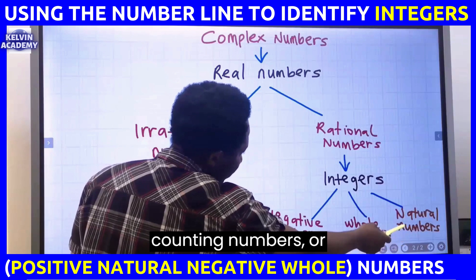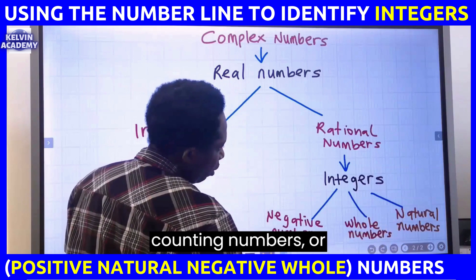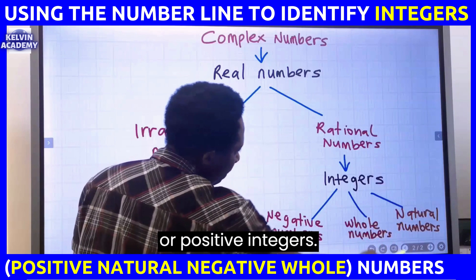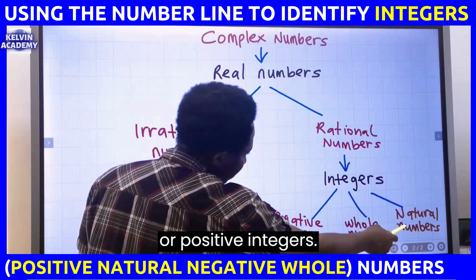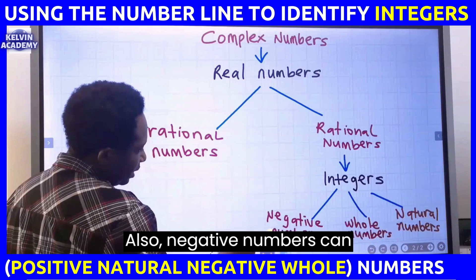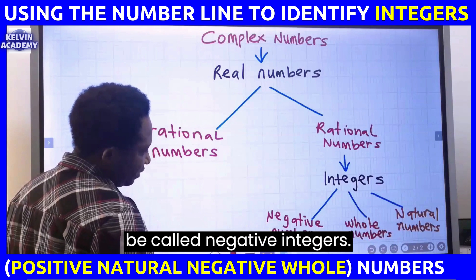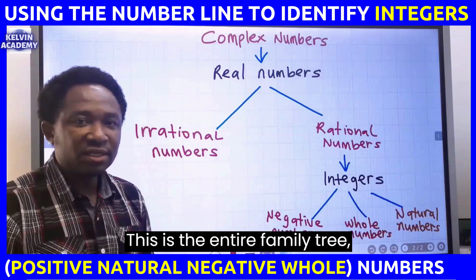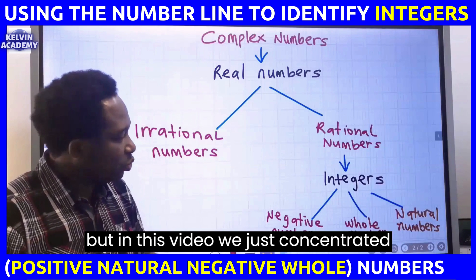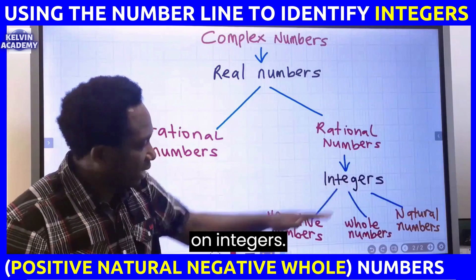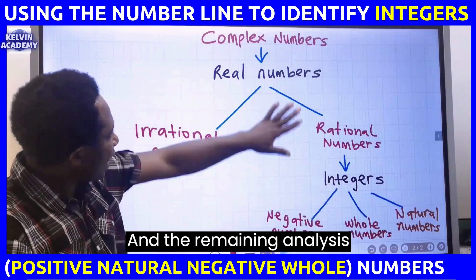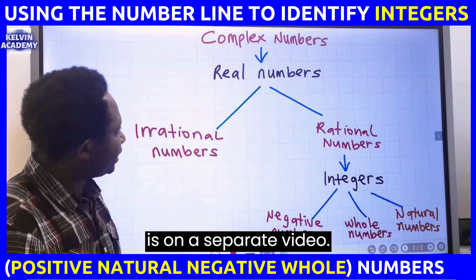Natural numbers can also be called counting numbers, non-negative numbers, or positive integers. Negative numbers can be called negative integers. This is the entire family tree, but in this video we just concentrated on integers, and the remaining analysis is on a separate video.